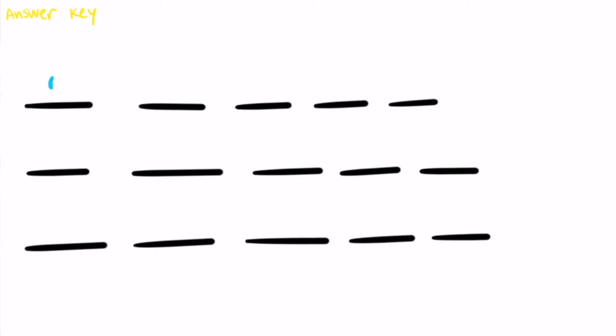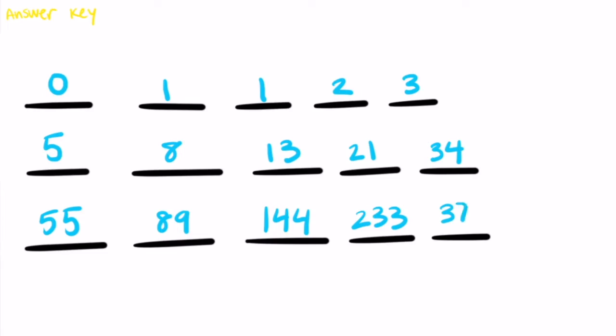Here are the first 15 terms: 0, 1, 1, 2, 3, 5, 8, 13, 21, 34, 55, 89, 114, 233, 377, and 610. The pattern you just calculated is called the Fibonacci sequence.